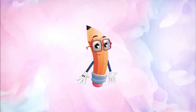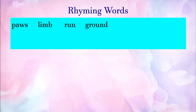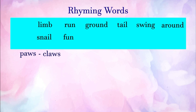Let's try another activity. In the poem, we have seen there are certain rhyming words. In the box given below, there are certain words, and also words that rhyme with these given words. Try to find out the pairs of rhyming words from the box. The words are: pause, limb, run, ground, tail, swing, around, claws, snail, and fun. Can you select the pairs of rhyming words? Let me help. The first word is 'pause' — it makes a rhyme with 'claws.' Next is 'limb' — try to find out.